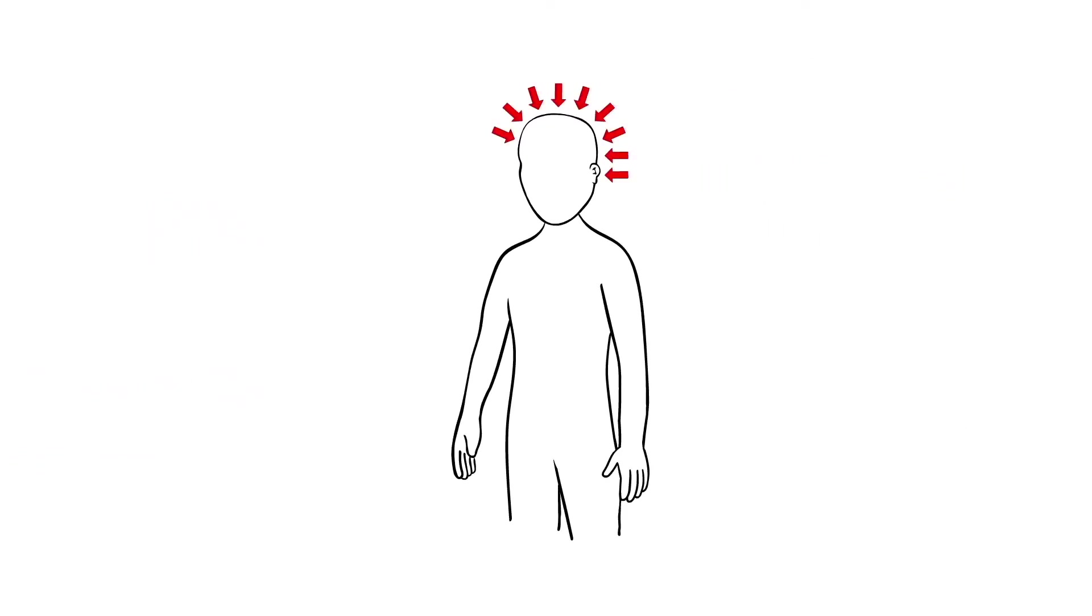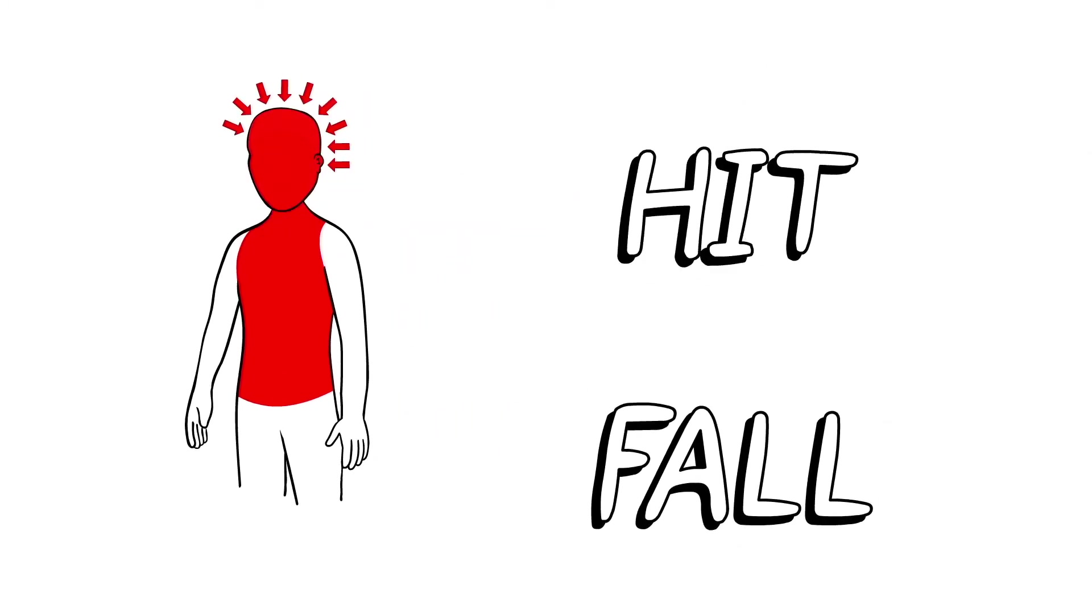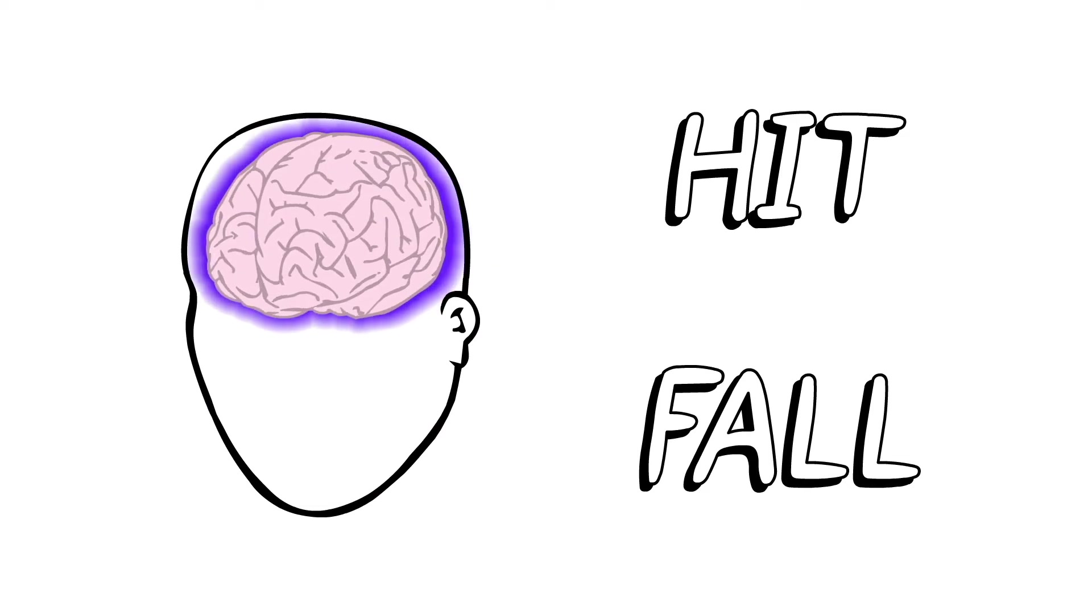Concussions are caused by a blow to the head, face, neck, or body, from a fall, a hit, or anything that knocks someone hard enough that their brain moves around inside their skull. Brain bounces around in the head.